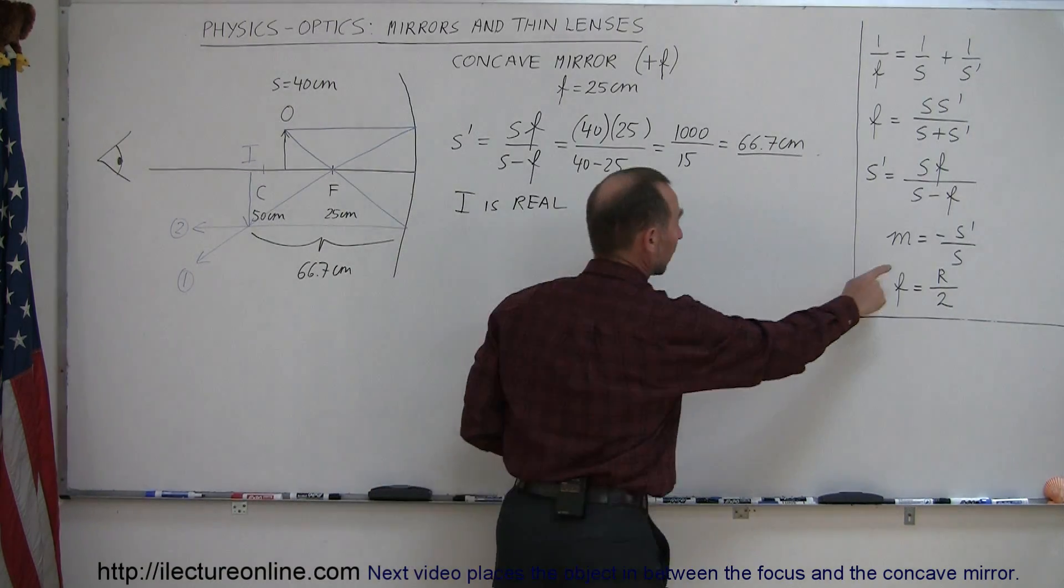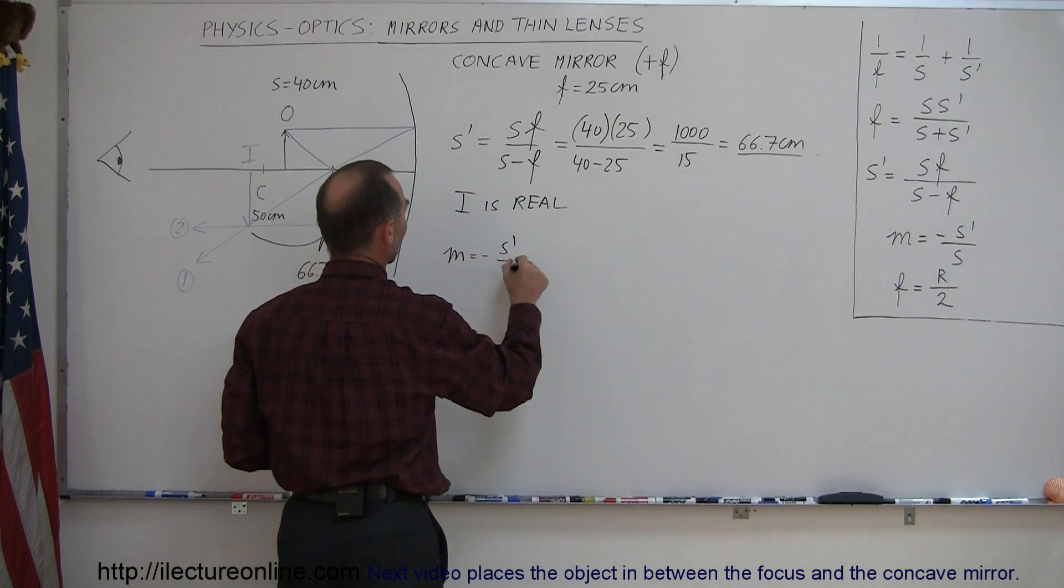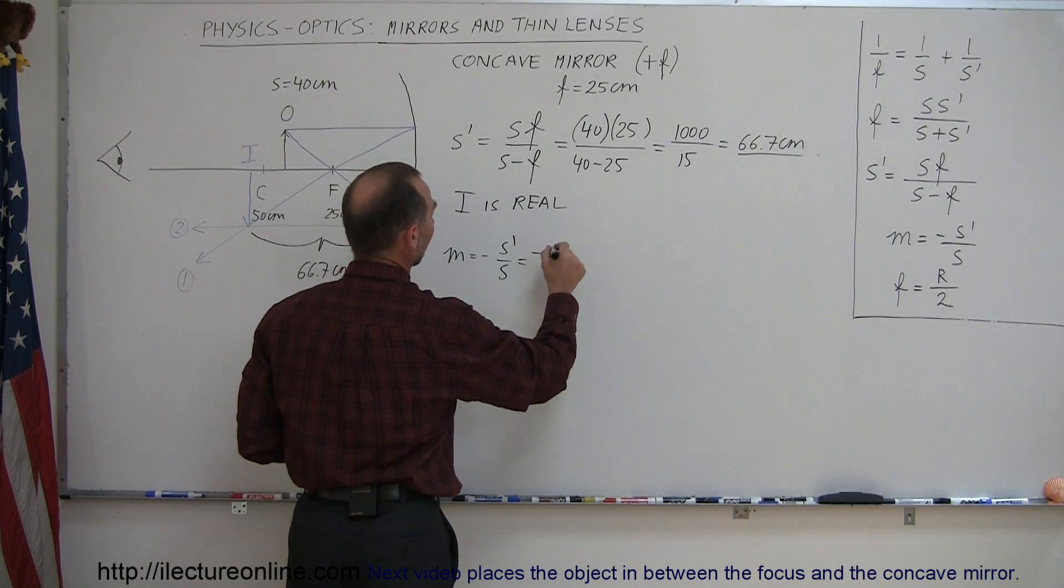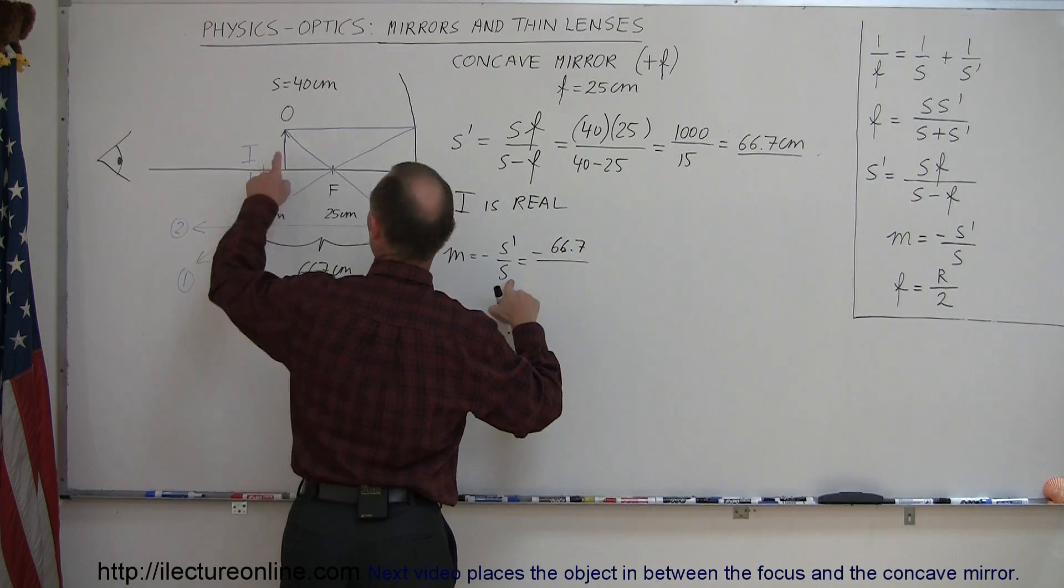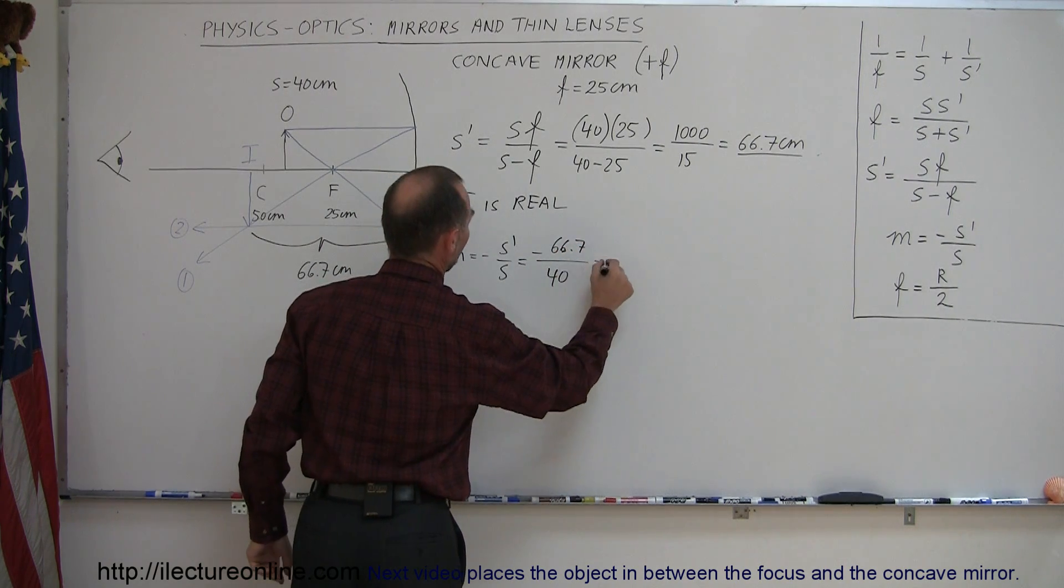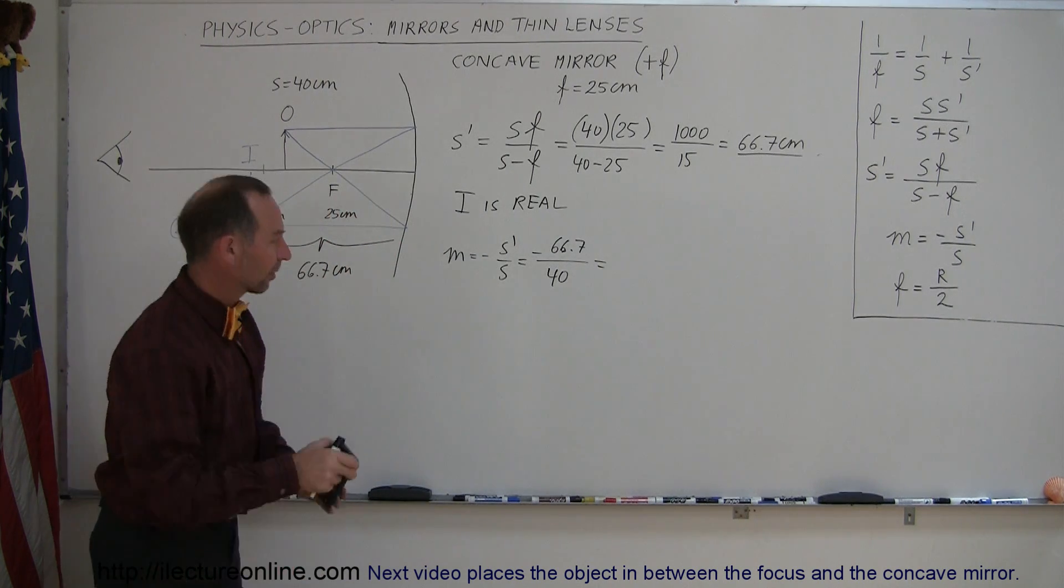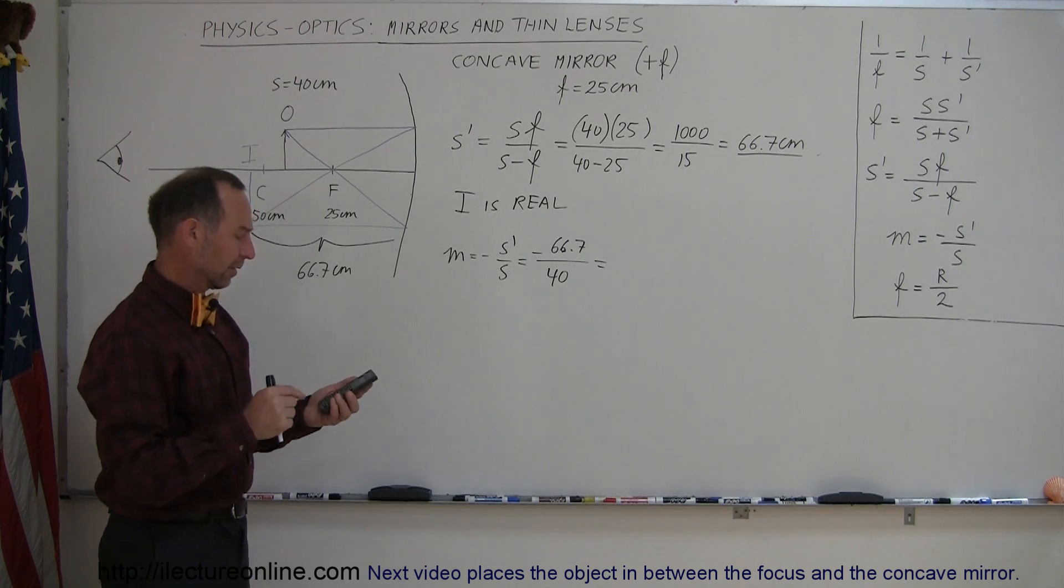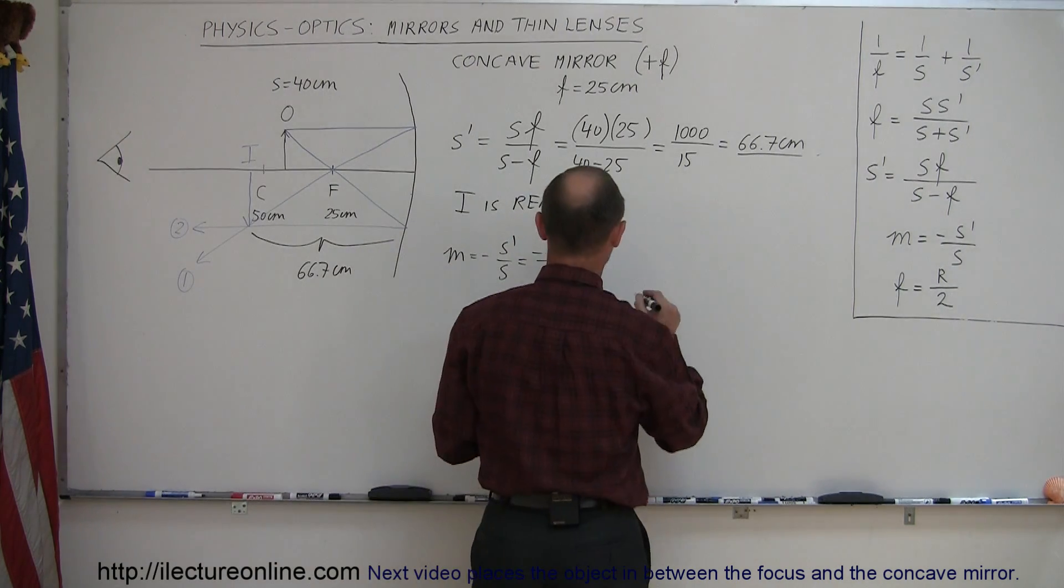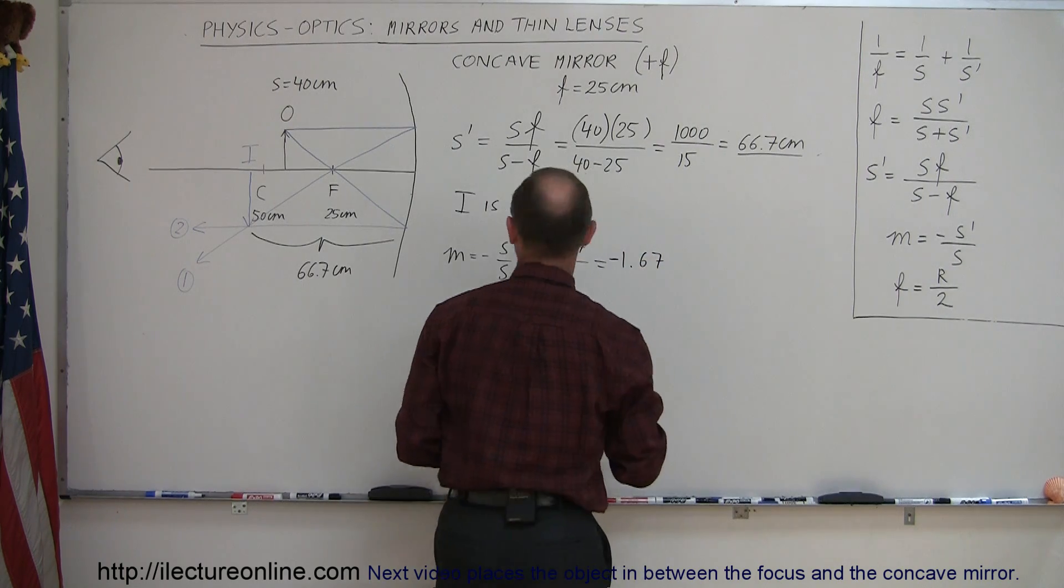The next thing we're going to do is find the magnification. So we use this equation right here, that the magnification is equal to minus s prime over s. In this case, that's minus 66.7 divided by s, where s was 40. And let's see here, let me get my calculator out, so 66.7 divided by 40 is 1.67. And it's negative.